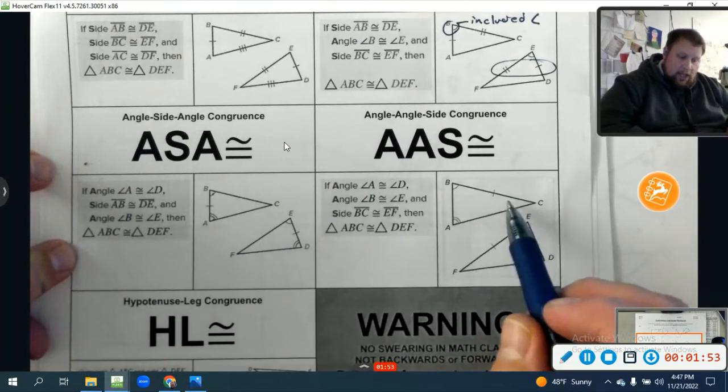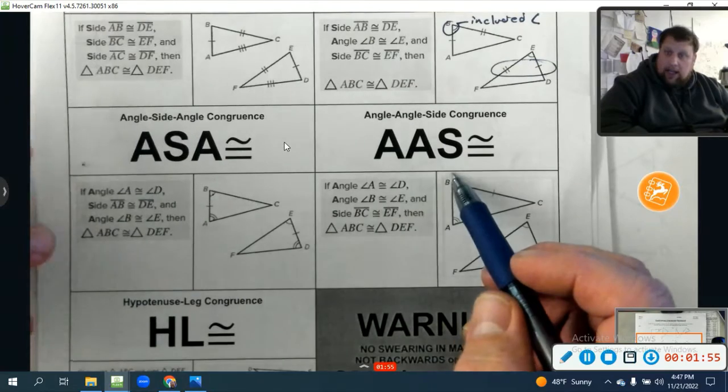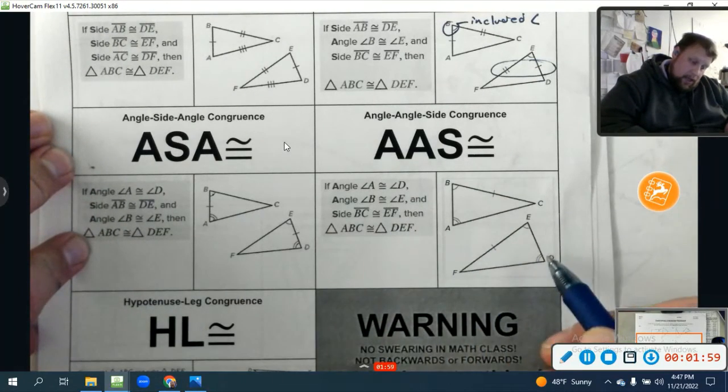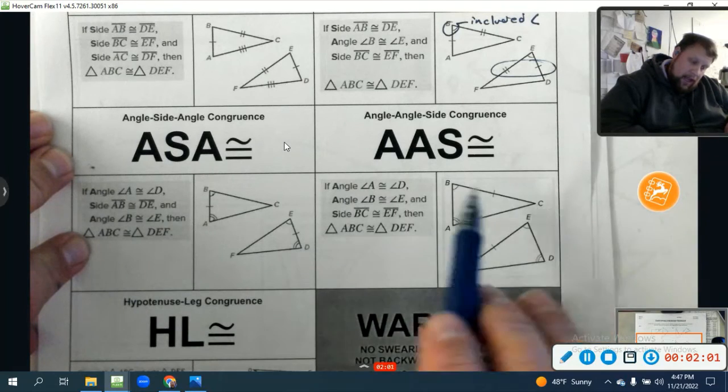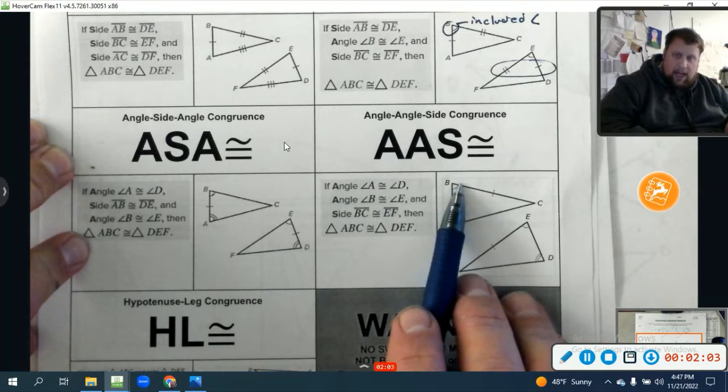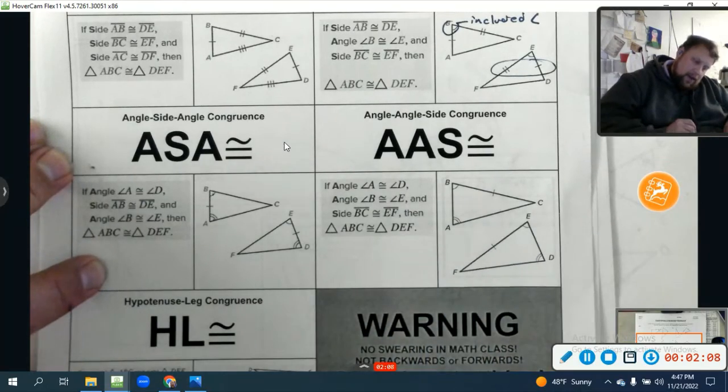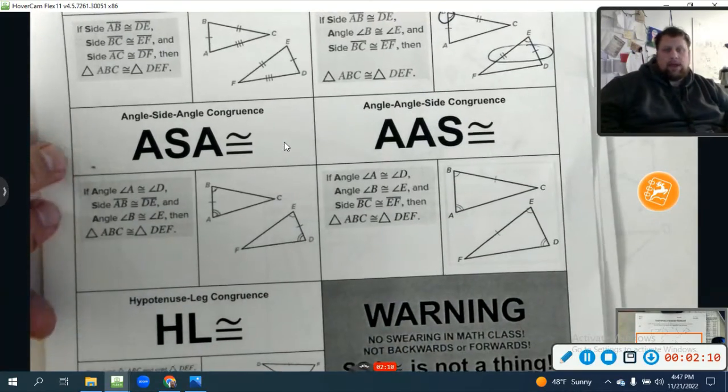Now, if it's a non-included side, that's angle, angle, side. Angle, angle, side does work. So if angle A is congruent to angle D, angle B is congruent to angle E, and then that non-included side BC is congruent to side EF, the triangles are congruent by angle, angle, side.